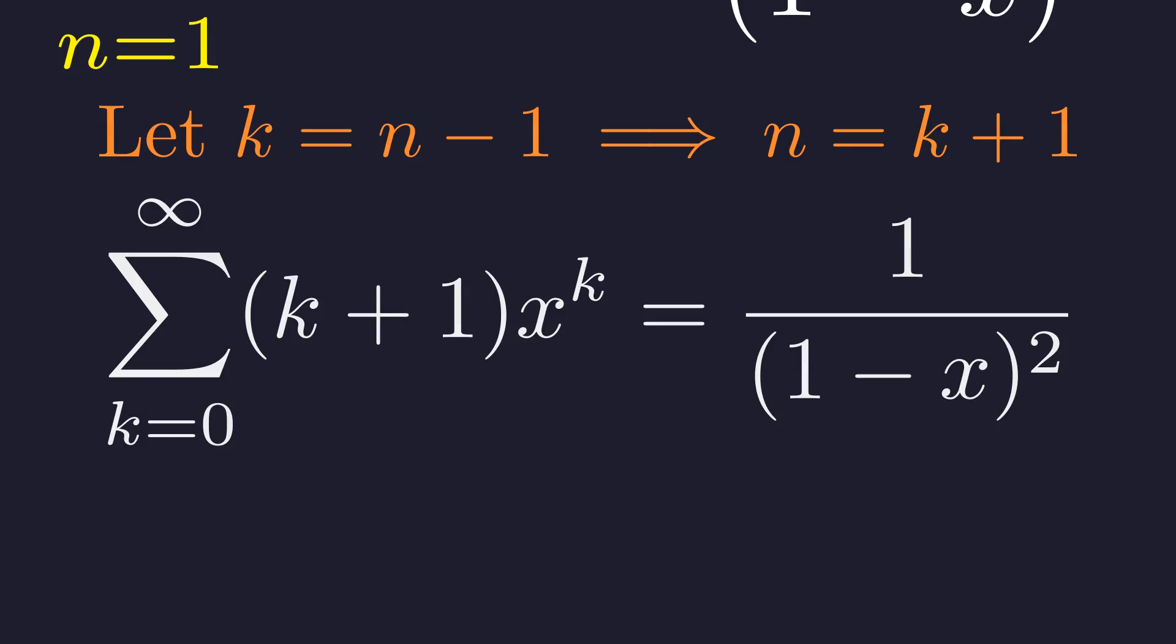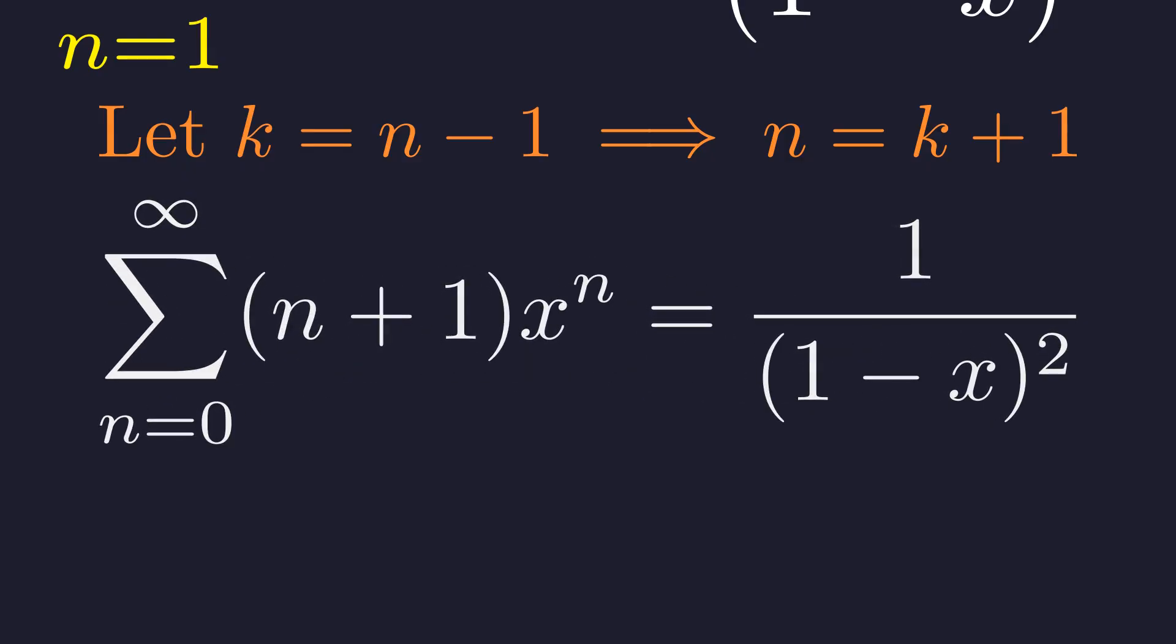Since k is just a dummy variable for the summation, we can rename it back to n without changing the value of the sum. And so, we have our final answer. The infinite sum simplifies to this compact and beautiful expression.